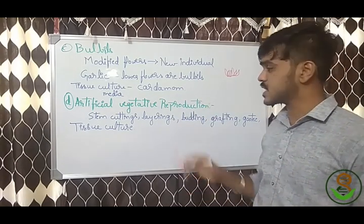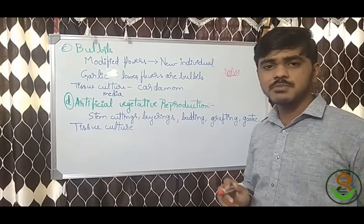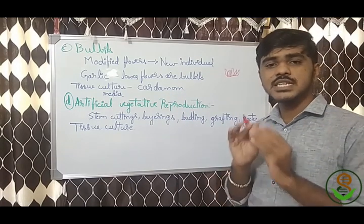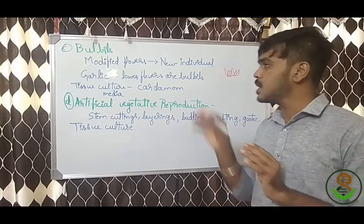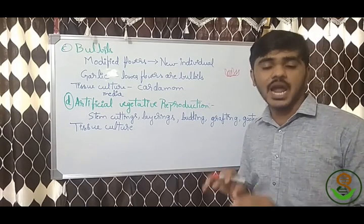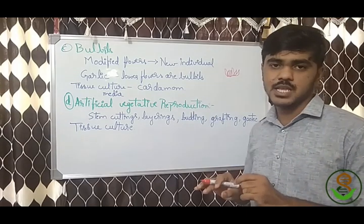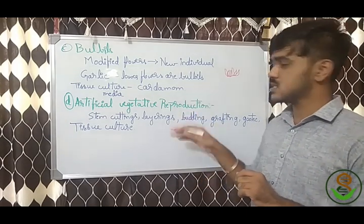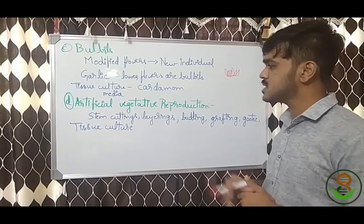An example of bulbils is garlic. In cardamom, scientists have successfully induced bulbil formation on tissue culture media. These are the things related to bulbils as a mode of vegetative reproduction.